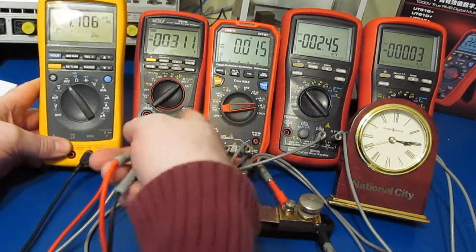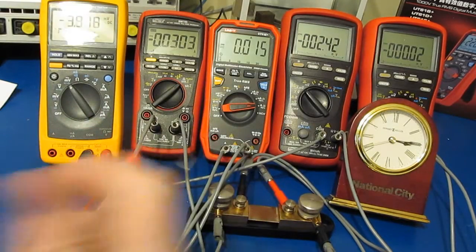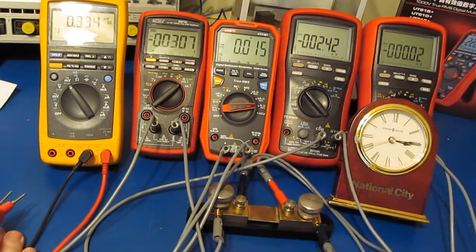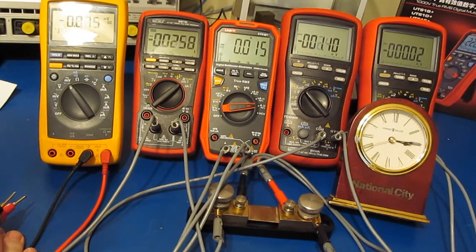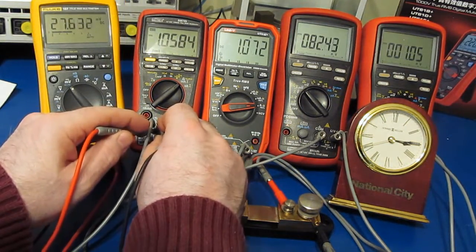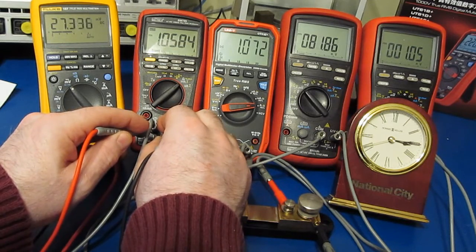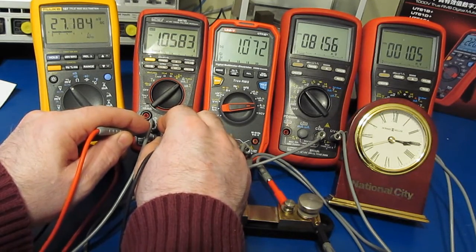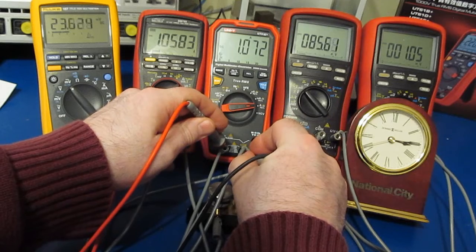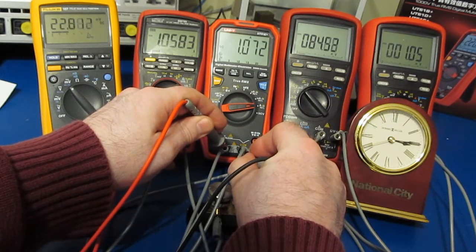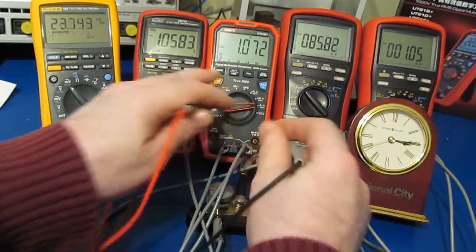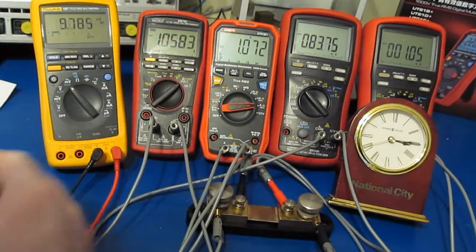I believe that these both have the same value as shunt. Let's apply a little bit of current through them. It looks like our BM 789 is reading roughly 27 millivolts and our UT 61E plus is about 23 or so millivolts. So very similar shunt between the two.